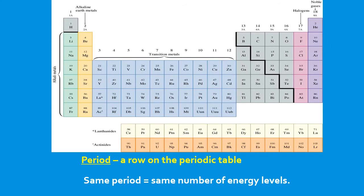A period is a row on the periodic table, and the rows or periods go from left to right. So they are horizontal. They go from left to right. Elements in the same period have the same number of energy levels. You may hear shells, and we'll talk about all that later on.